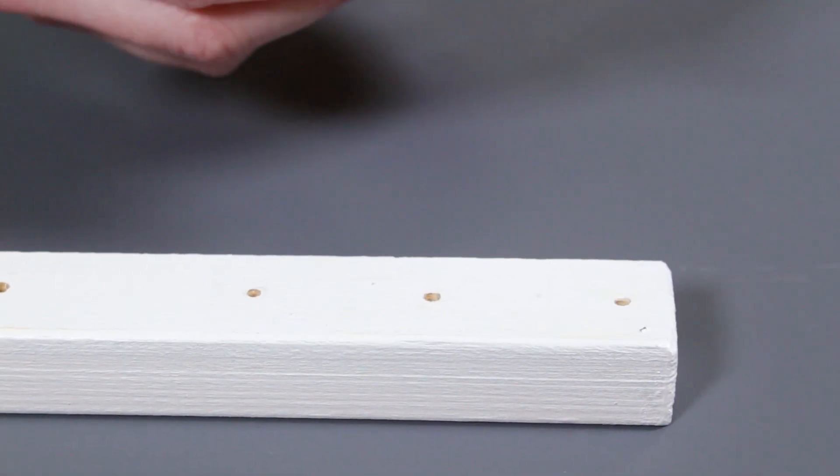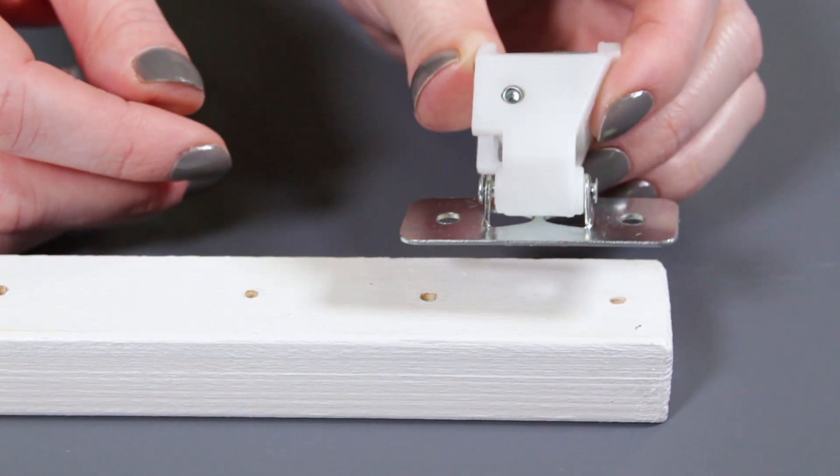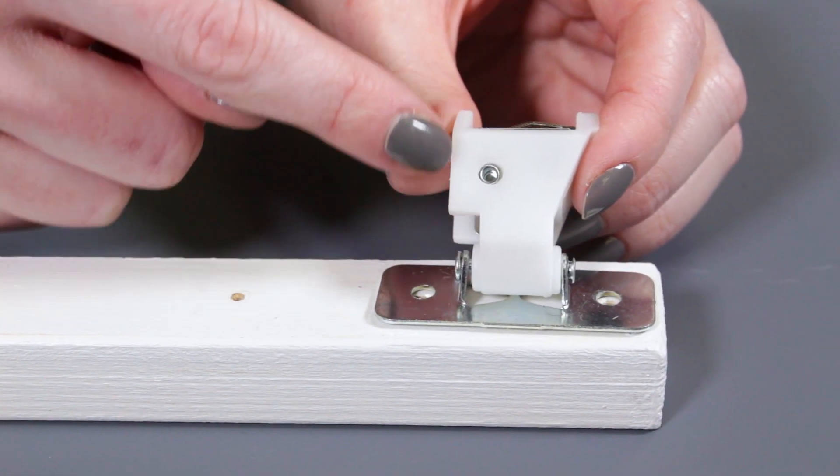First, attach the cord lock to a board or window frame. Place the cord lock at the end of the board. Make sure it's facing the right direction.